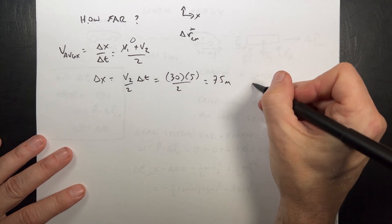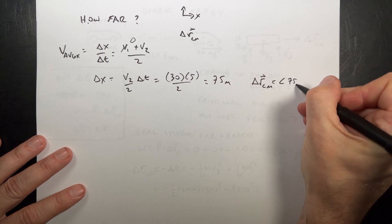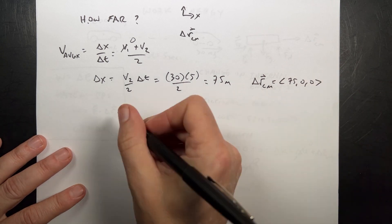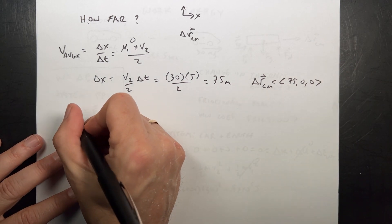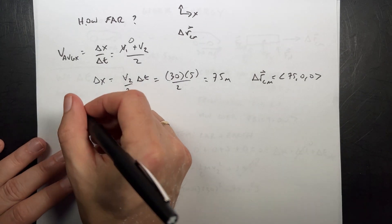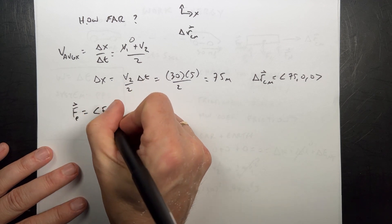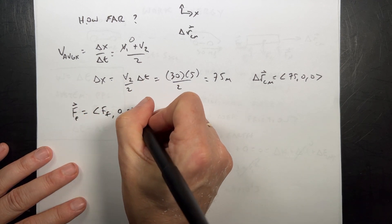Now I can write delta r as a vector if I want to. And the force of friction. Is that what we're finding next? Yeah, the friction force. F friction is going to be ff, some value. It's only in the x direction like that.